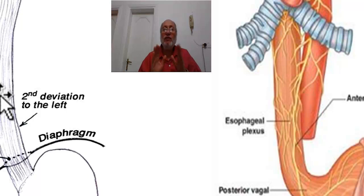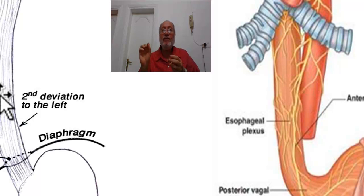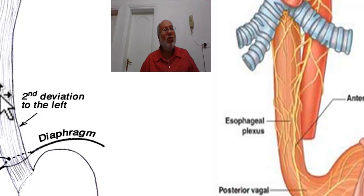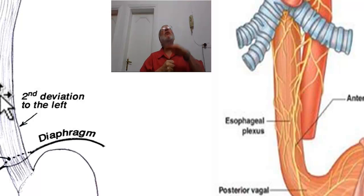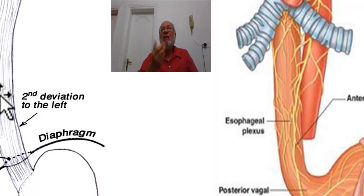Oesophageal disease gives mainly dysphagia. There may also be halitosis — bad odor of the breath. Why? Due to oesophagitis, and if there is retained fluid in the oesophagus due to distal obstruction, the fluid above becomes fermented and infected, turning into dirty fluid leading to bad breath — halitosis.